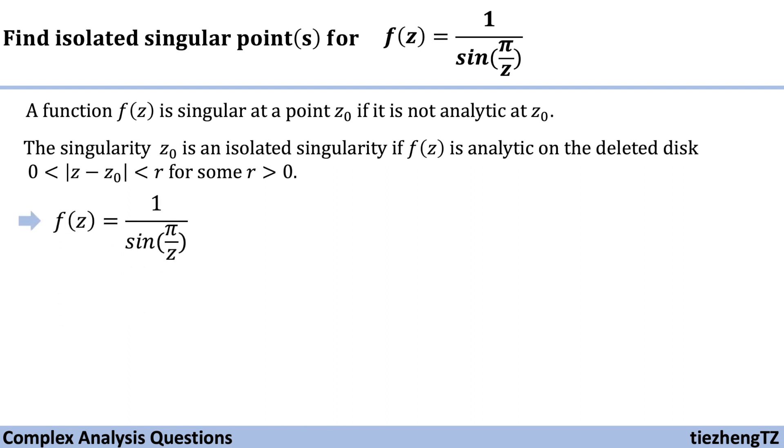Now let's go back to this function 1 over sin(π/z). First, when π/z is an equation, z is the denominator. It cannot be 0. So z equals 0 is one of the singular points.